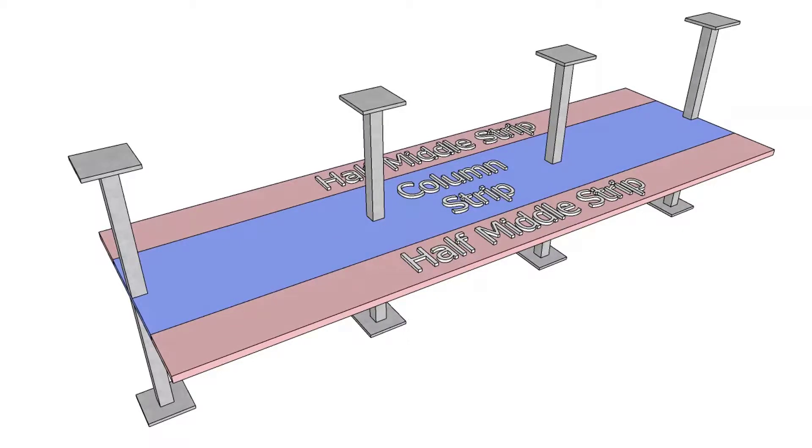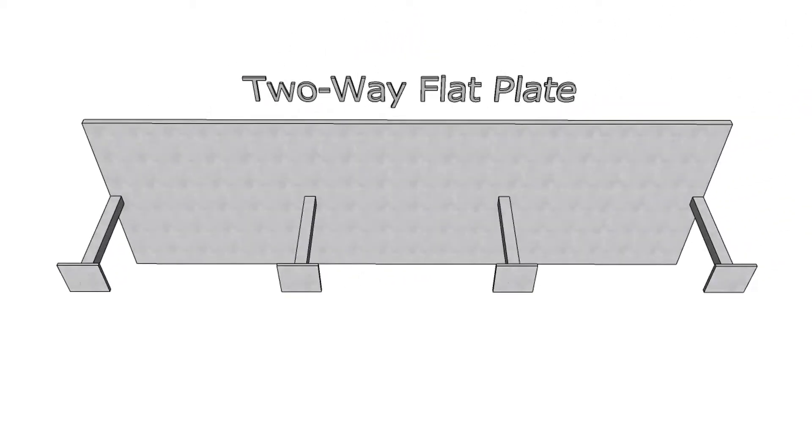Note that there are no restrictions on the number of slab spans or on dead-to-live load ratios in the equivalent frame method compared to other simplified analysis methods such as direct design method. SP Slab analyzes and designs the most common two-way slab systems.